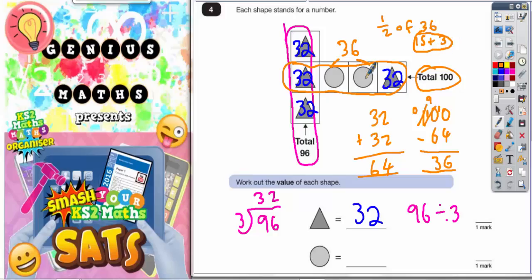If you add those together, half of 36 would be 15 and 3, which is 18. So each of these circles must be worth 18. As a quick double check, you could actually add all of them together to make sure it makes 100. So 32 plus 18 plus 18 plus 32.